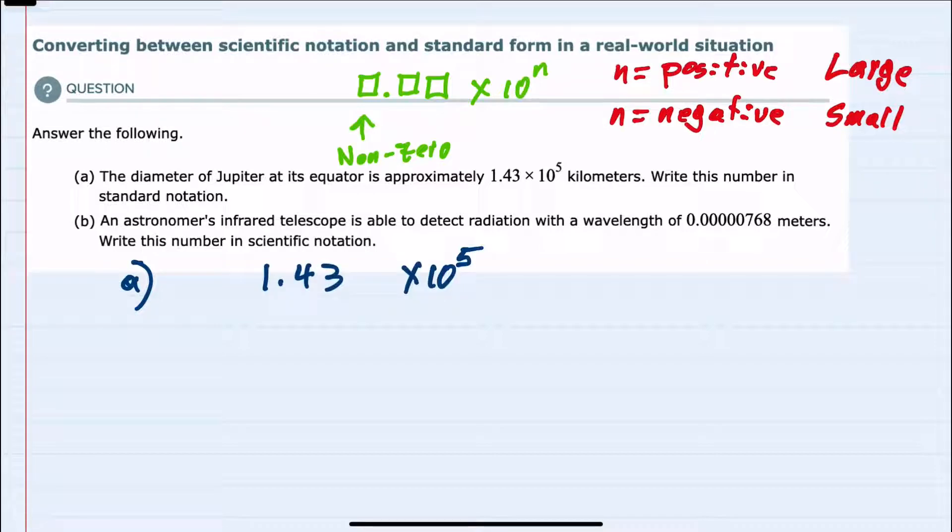I'm given the number in scientific notation. As I move to standard notation, numbers written the way we're more familiar with, I recognize this as a positive exponent, so this is a very large number. Scientific notation is taking this small number, 1.43, and making it larger by 5. By moving the decimal place 5 times, I can write it without the 10 to the 5th.